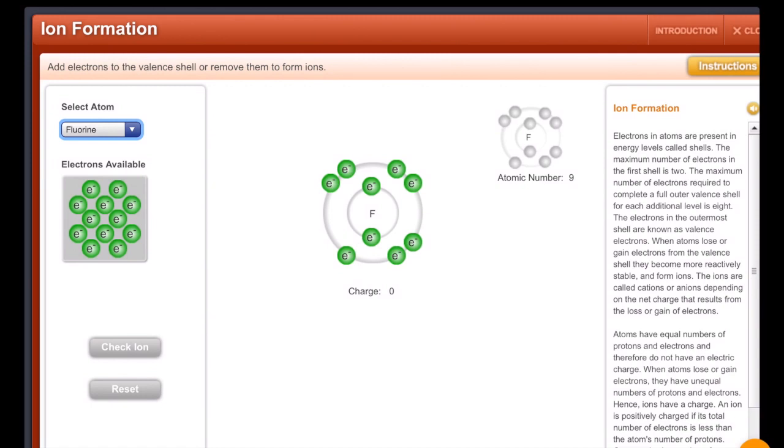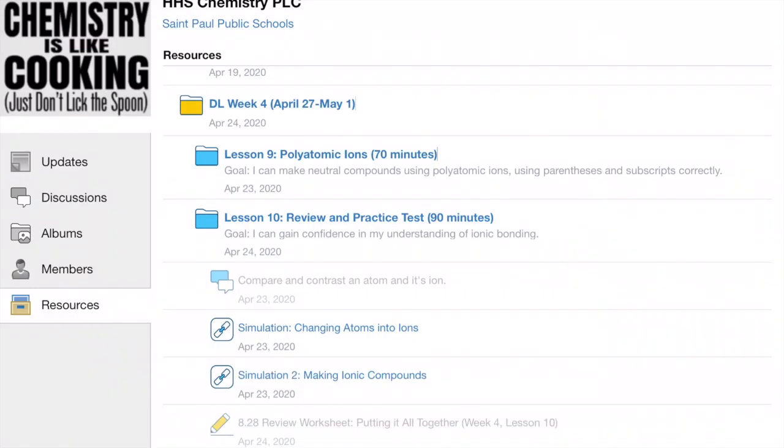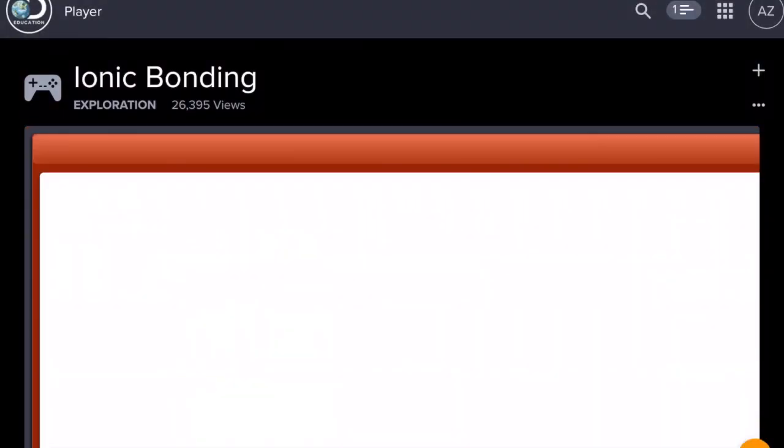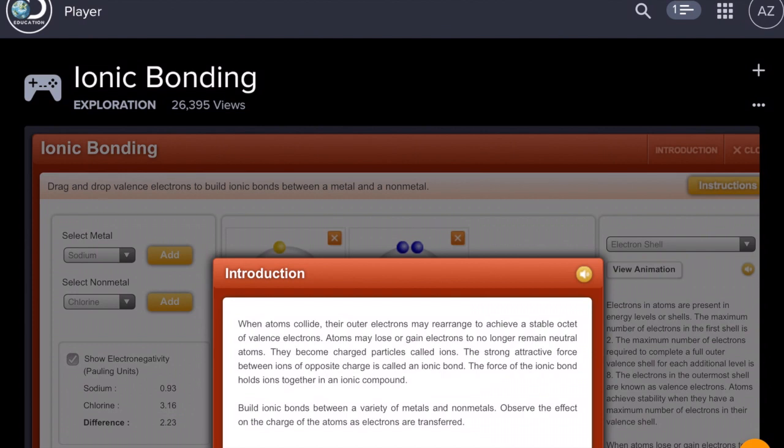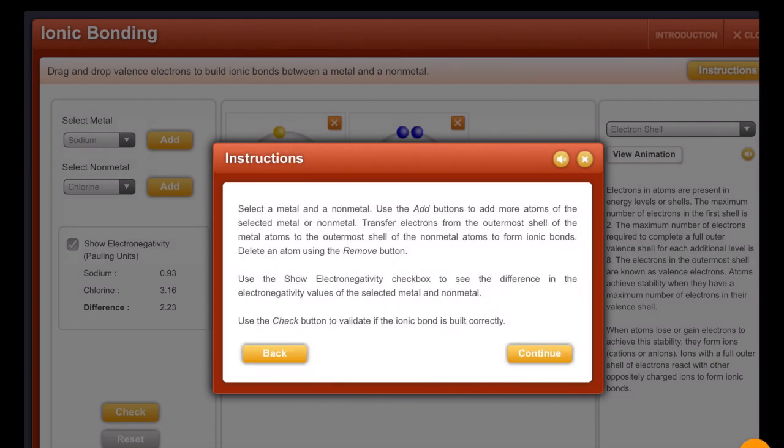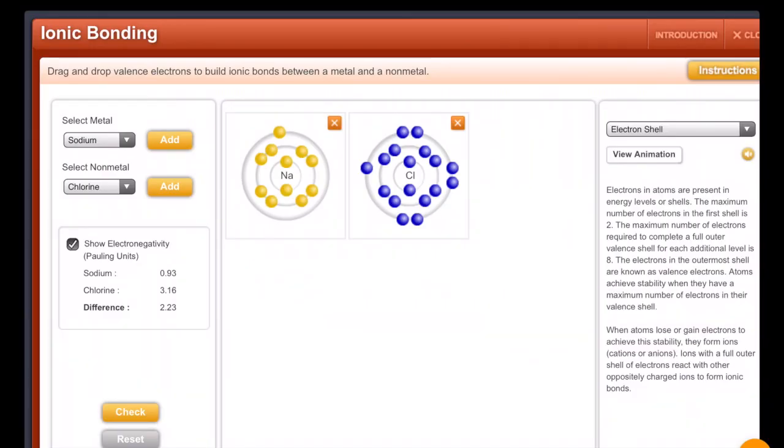And then the next game looks like this. In this one, we're going to use ions and make them bond. As we know, a positive cation and a negative anion will bond. And again, you can have this read to you by pressing the speaker button and read the next one. And then now we're going to make these ions bond,